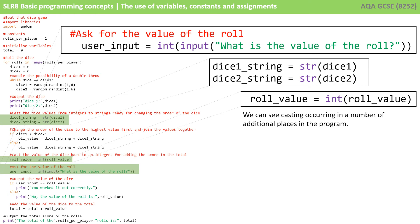We can see casting occurring in a number of additional places as well. So we can see in these top two lines that we take the value that's held in the variables dice one and dice two, which are integers. And then we cast or convert those into their string equivalents and then assign those to the variables dice one string and dice two string. You can see lower down, we take the contents, the variable role value, and we cast and convert it to an integer before storing it back into role value. We can actually cast from any data type to any other data type.